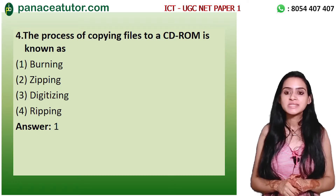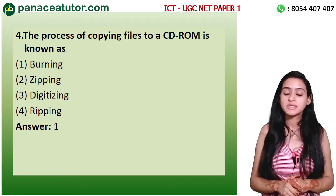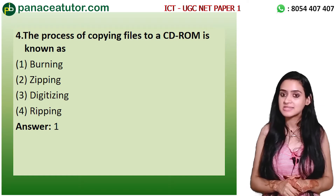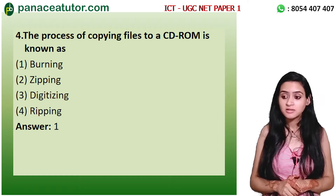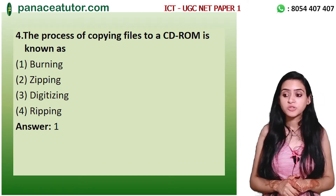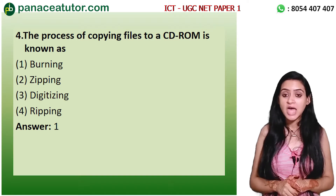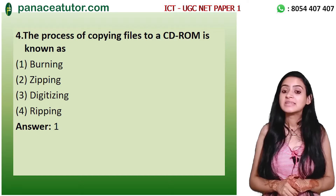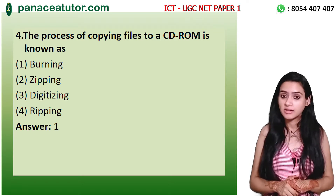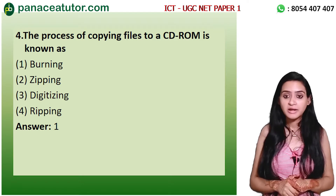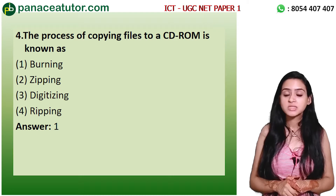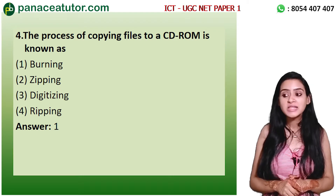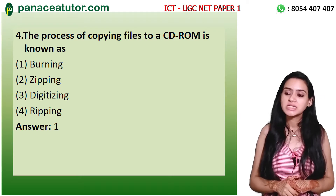The next question is related to CD-ROM. The question says: The process of copying files to a CD-ROM is known as — Option A: Burning, Option B: Zipping, Option C: Digitizing, Option D: Gripping. The correct answer is Option A — Burning. Burning is the process of copying files to a CD-ROM.